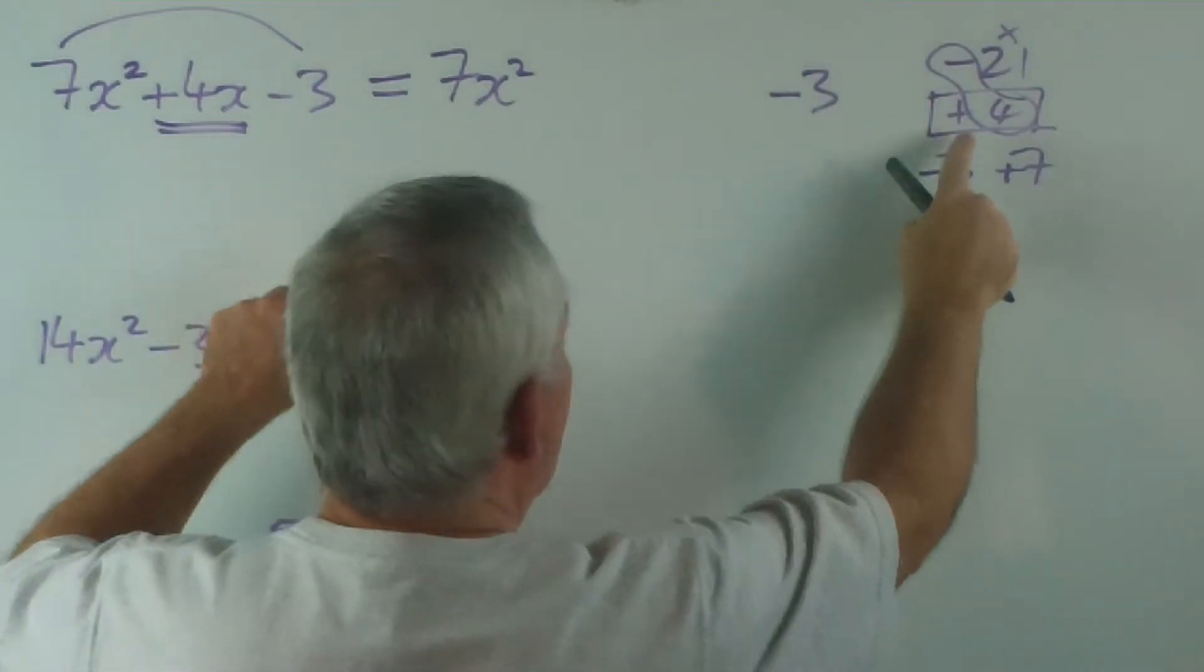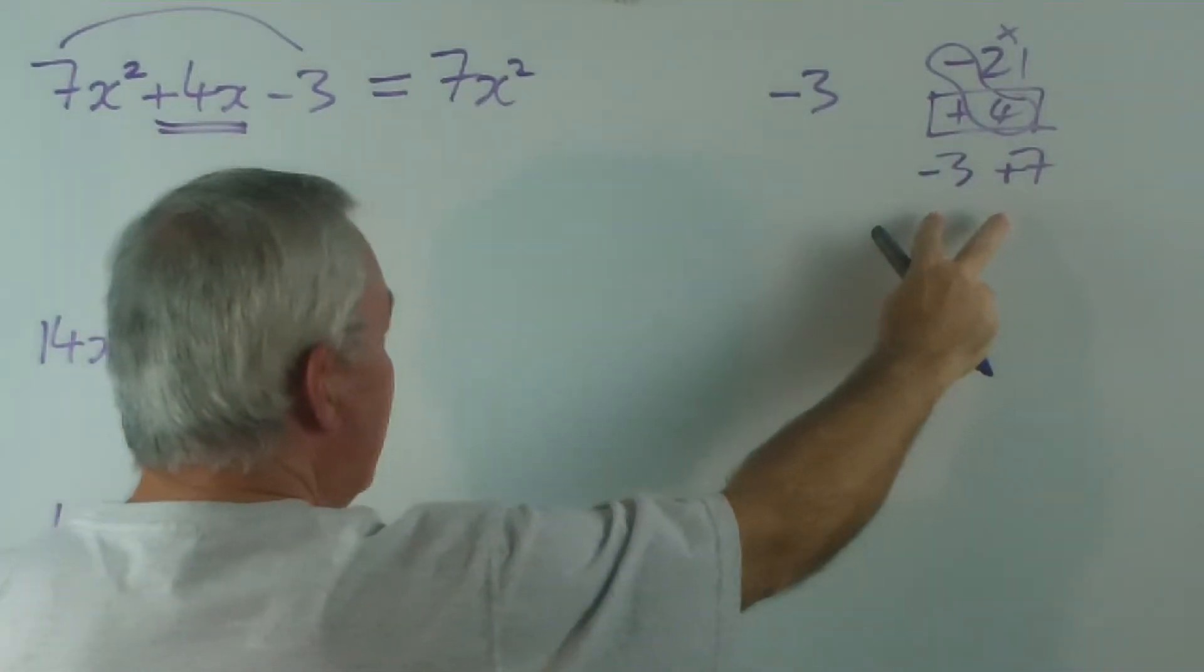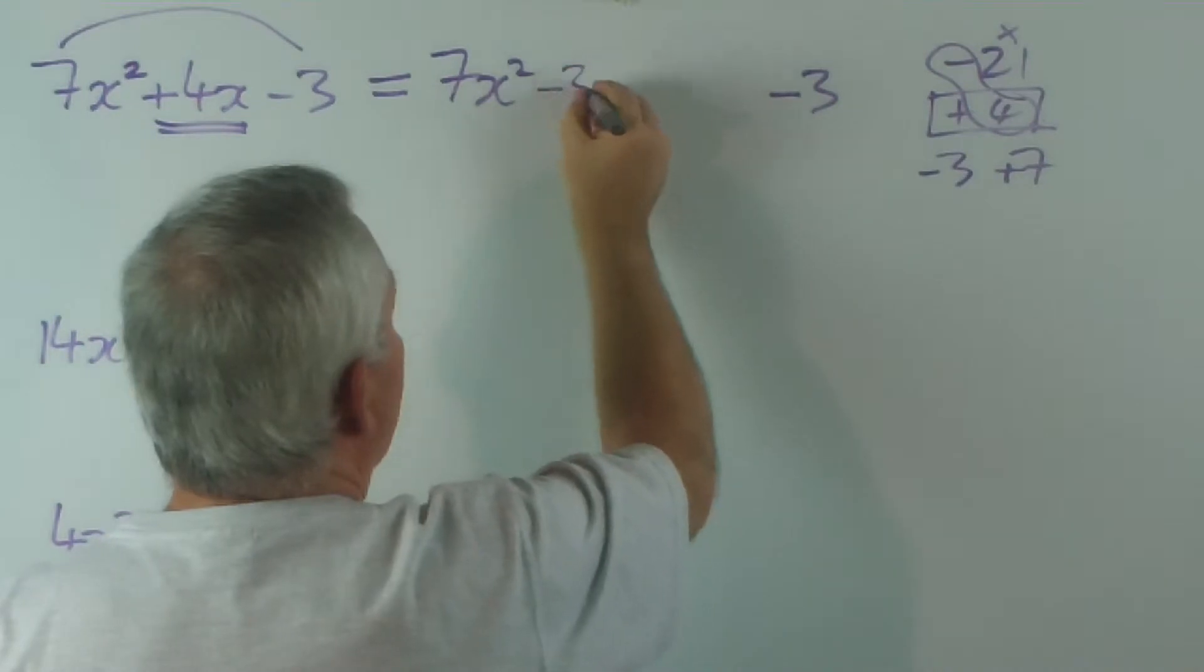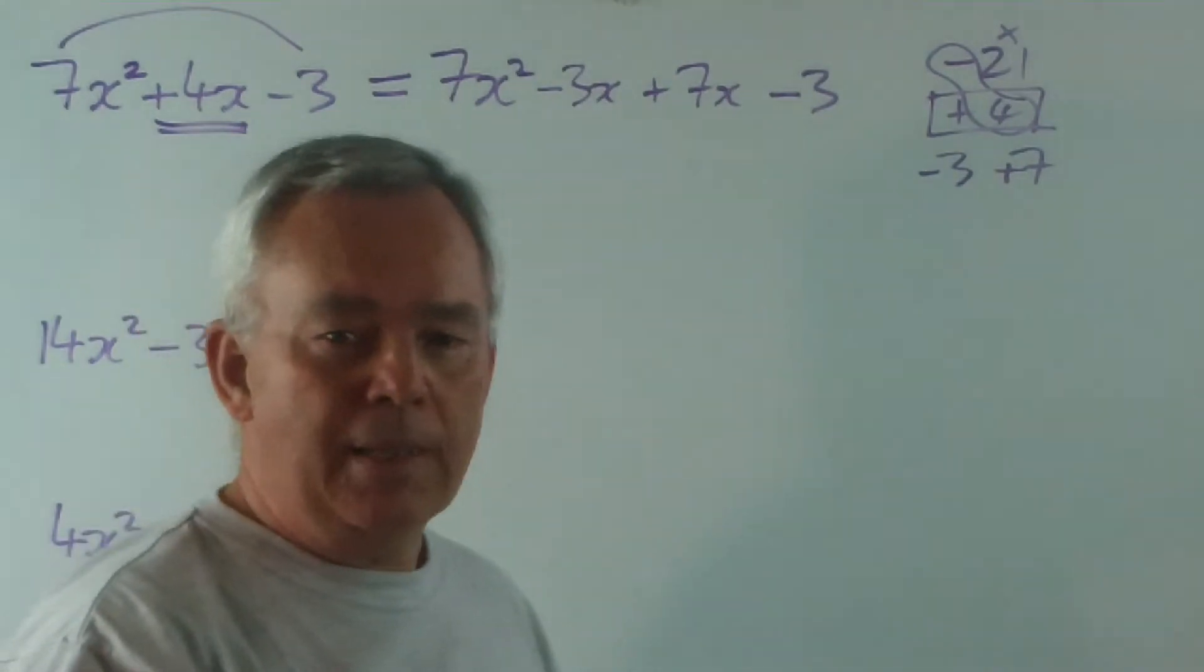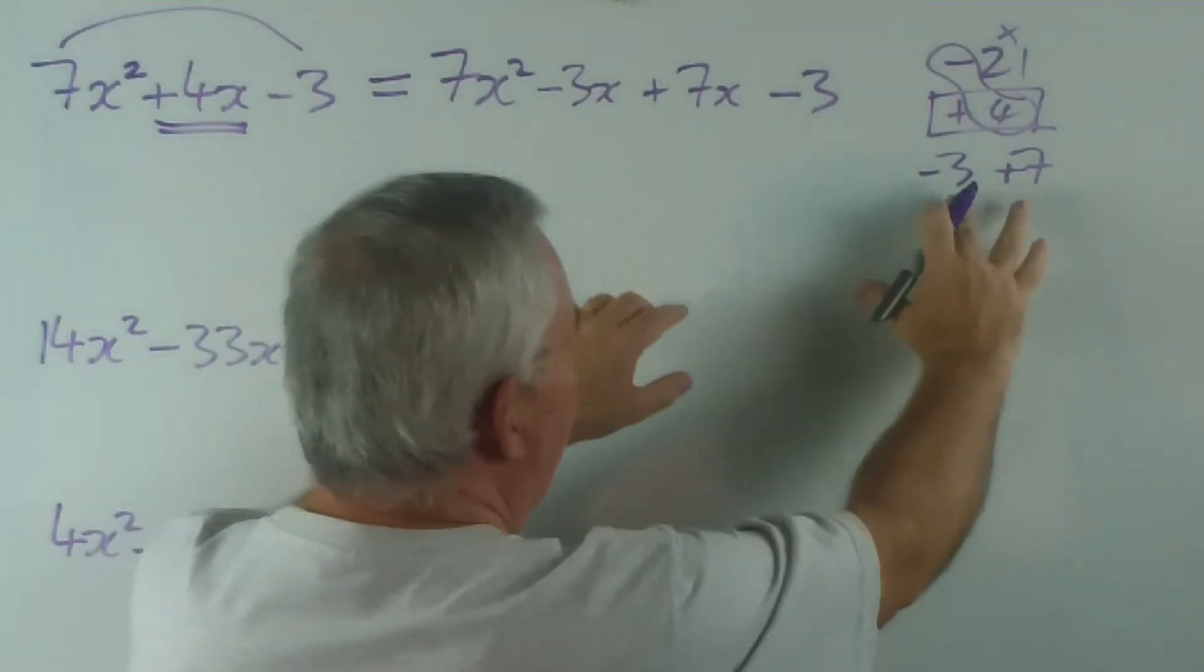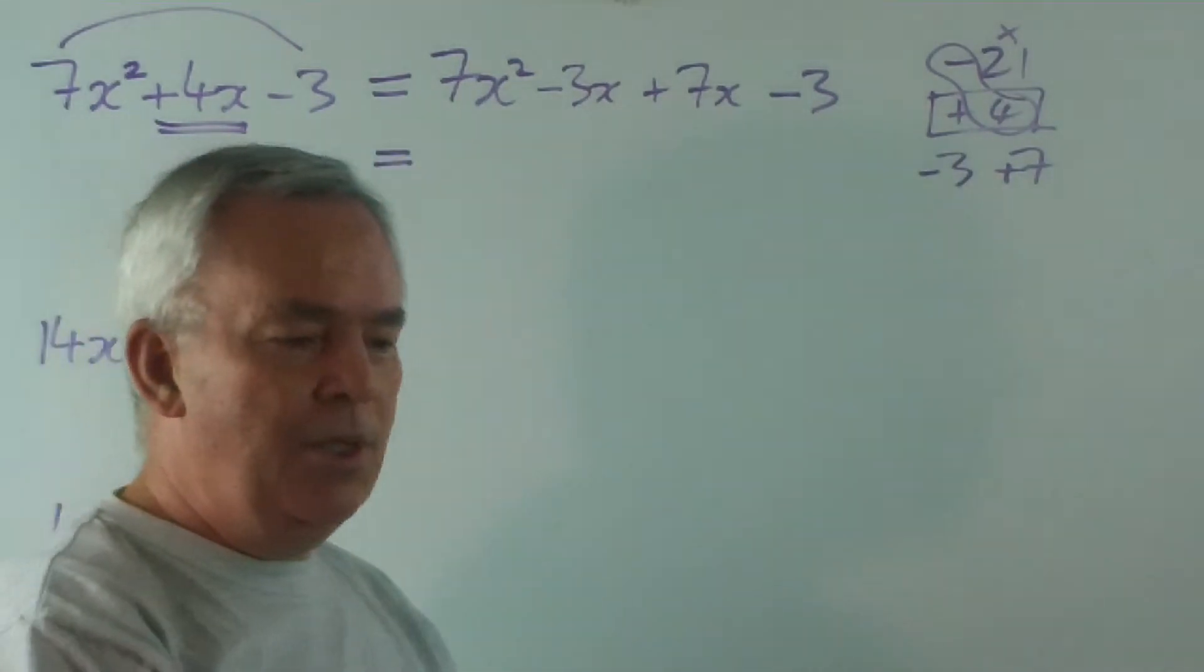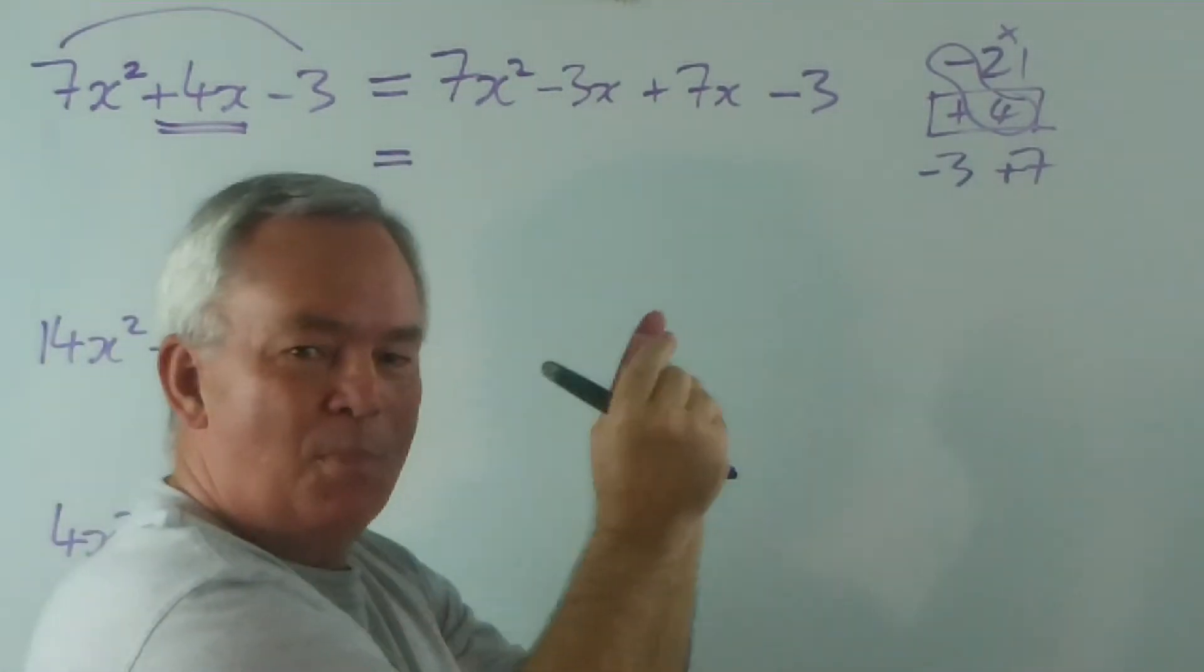What it does is it breaks this plus 4, this number, into two separate numbers that actually combine nicely with the outside ones. So, we're going to replace the 4x with minus 3x and plus 7x. Now, the order does not matter. You'll get the same result either way. So, don't panic. Just, whichever order they come out here, put them in. So, there's our minus 3x and our plus 7x. The reason this is called the decomposition method is we've decomposed the 4 into its two-component parts.